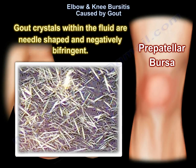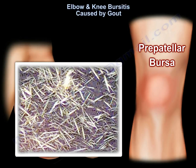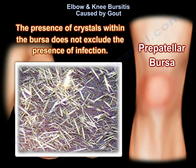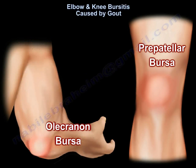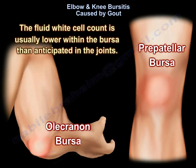Gouty crystals within the fluid are needle-shaped and negatively birefringent. The presence of crystals within the bursa does not exclude the presence of infection. The fluid white cell count is usually lower within the bursa than anticipated in the joints.